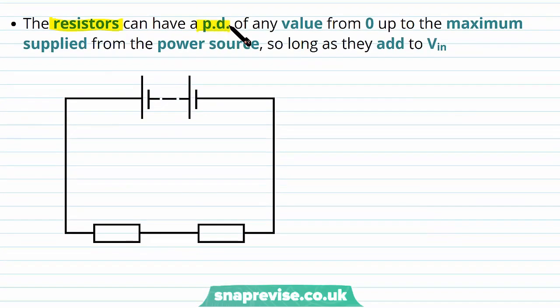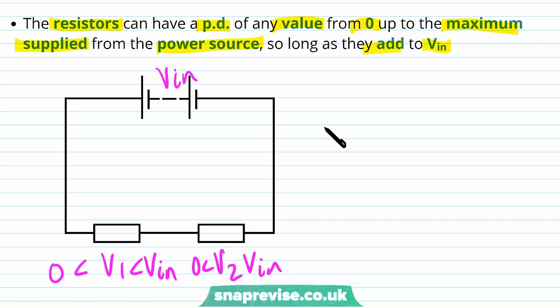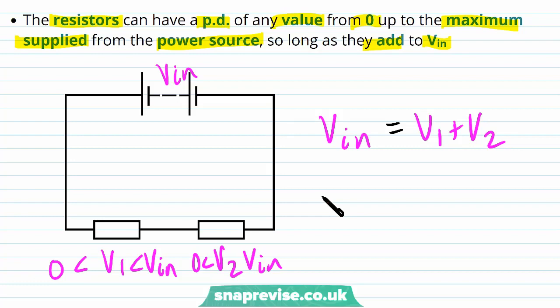The resistors can have a potential difference of any value from zero up to the maximum supplied from the power source, so long as they add to VIN. So V1 and V2 can take any value between zero and VIN, with the one condition that VIN = V1 + V2. For example, if V1 equals VIN, that would mean V2 would have to be zero, and vice versa.